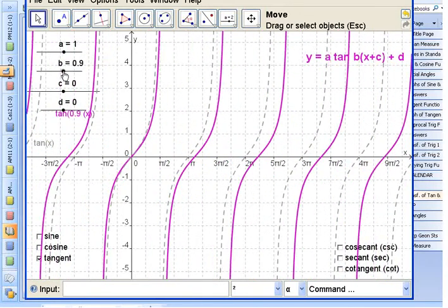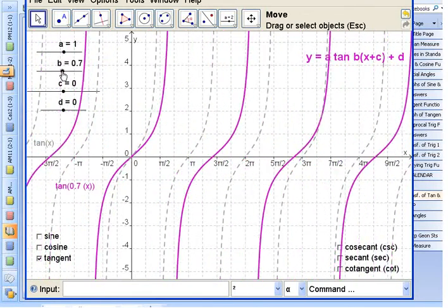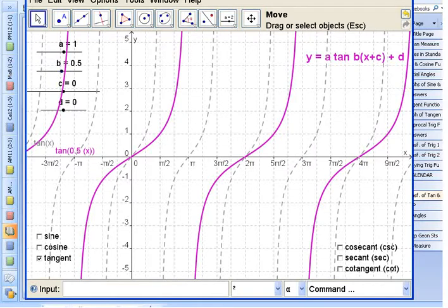If you change the period of the thing, it's going to move the asymptotes. They're going to change as well. If you double the period, if you make b equal 0.5, it doubles the period. It's going to double the location of the asymptotes. Instead of happening on the normal graph at π/2, where are they going to happen now?